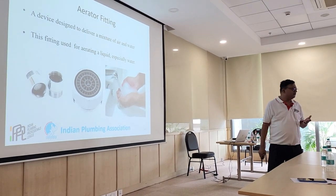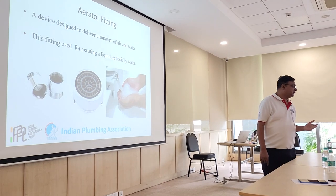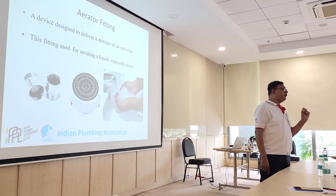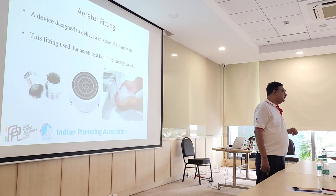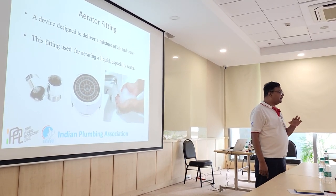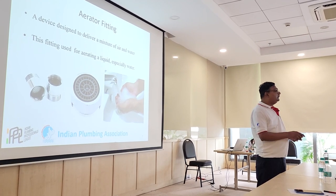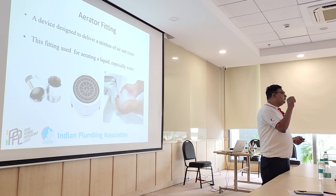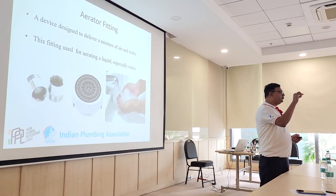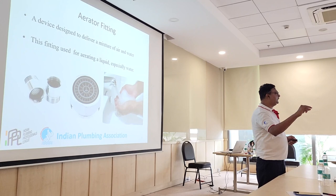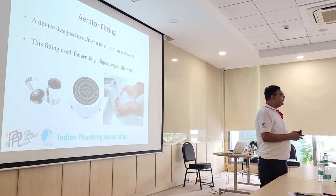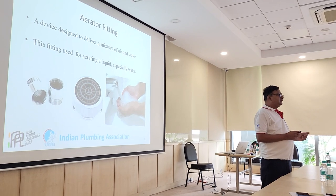If you go to the LEED or IGBC certifications, there are different types of aerators available based on what type of certification you are doing — whether silver, gold, platinum, or just compliant. There is a specific type of aerator suggested in the code. The aerator should reduce the flow by 5%, 10%, 25%, or 50%, and that gives you the points.